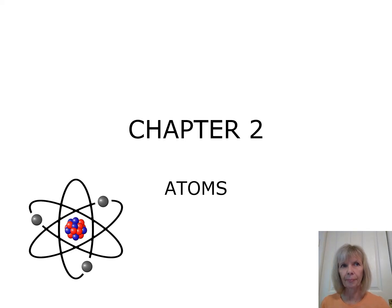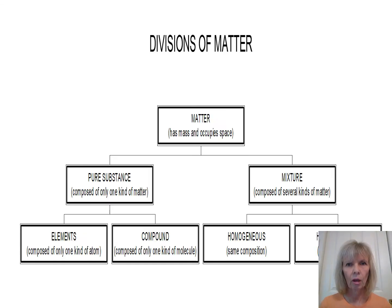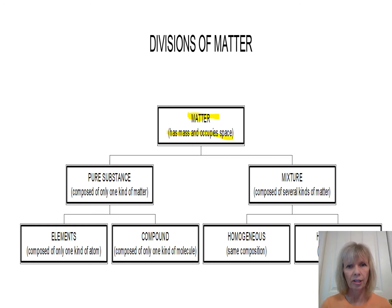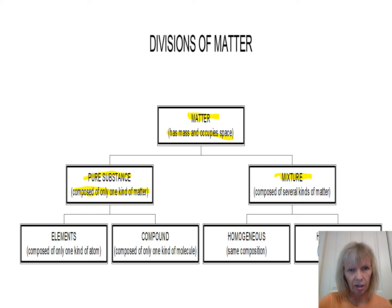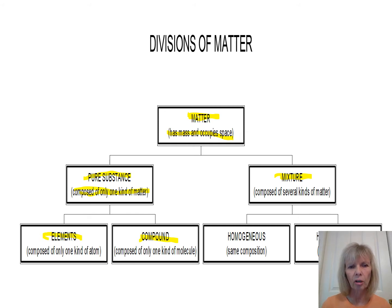Chapter two is on atoms. We're going to classify matter. Matter, as we learned in chapter one, is anything that has mass and occupies space — basically everything around us. Matter can be classified into pure substances and mixtures. A pure substance is composed of only one kind of matter, and pure substances can be further classified into elements and compounds. When you break elements down into the smallest particle that still behaves like that element, we call it an atom.